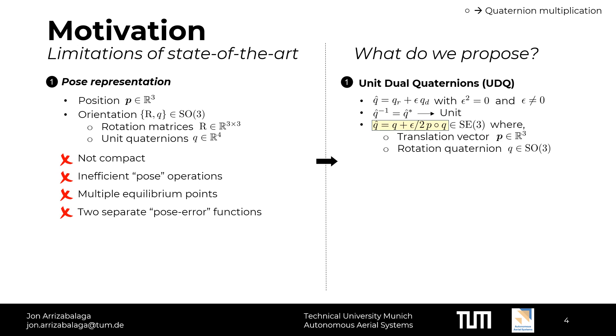When compared to more conventional pose representations, unit dual quaternions overcome most of the aforementioned limitations. First of all, their parametrization is compact, since it only relies on eight parameters. Second, their utilization is simple and efficient, because a series of rigid movements can be expressed as a sequence of dual quaternion multiplication. Third, due to their quaternion-based nature, unit dual quaternions inherit the double coverage of SO3 and thus have two equilibrium points. Last but not least, unit dual quaternions allow representing the pose error with a single function.